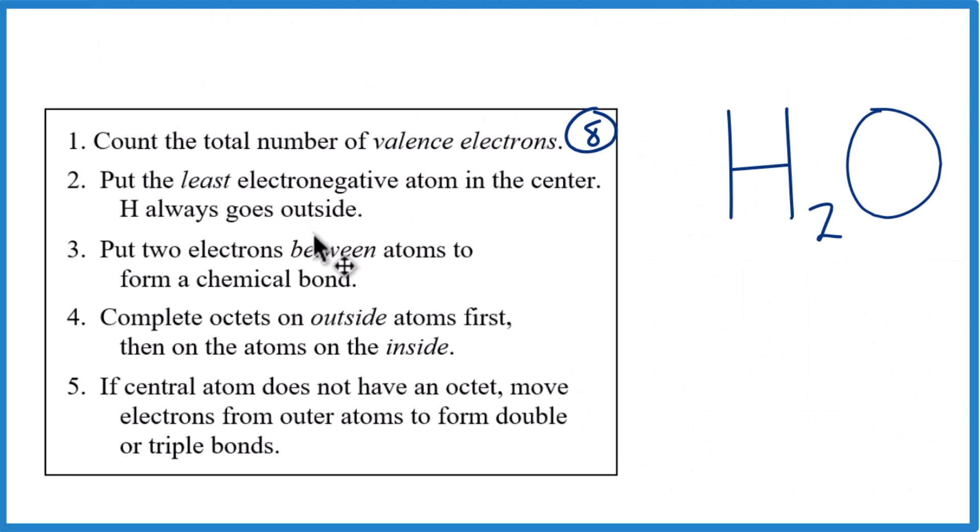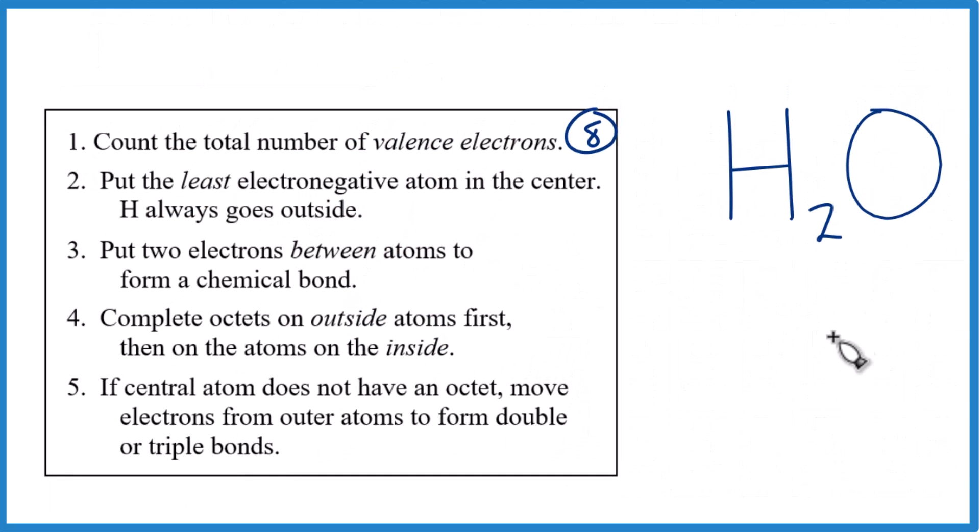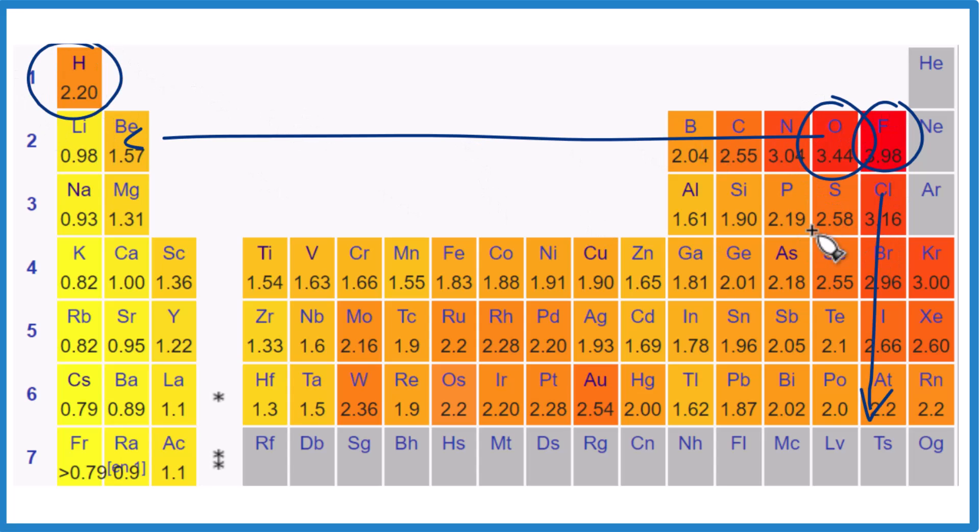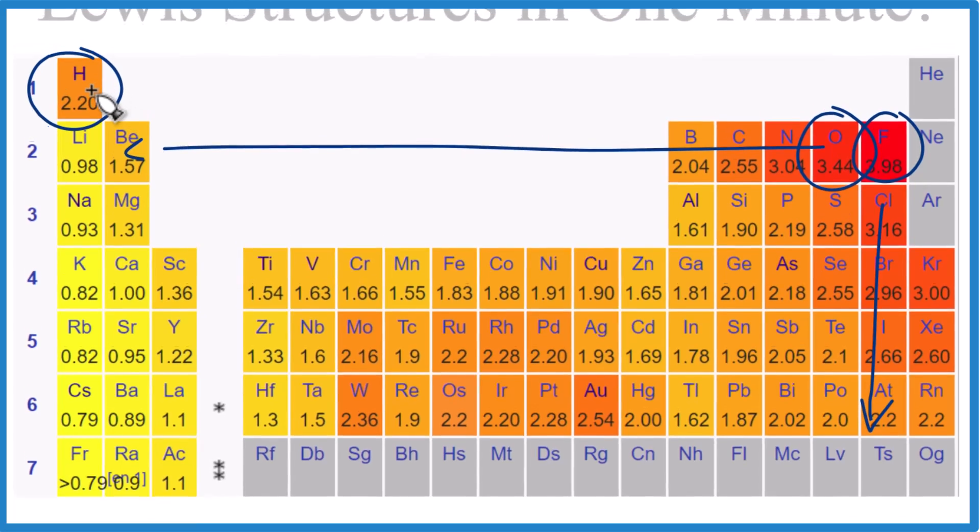We'll put the least electronegative element at the center of our Lewis structure. Fluorine is the most electronegative, so they get less going this way. But even though hydrogen has a lower electronegativity than oxygen, hydrogen always goes on the outside of our Lewis structures.